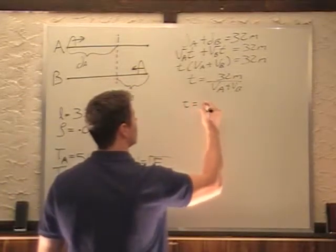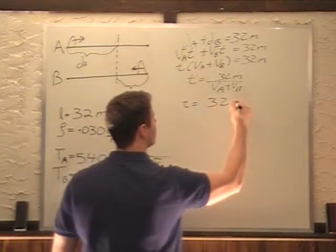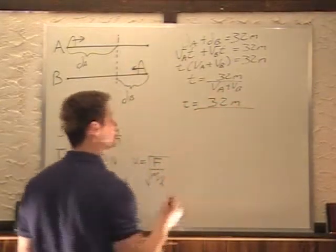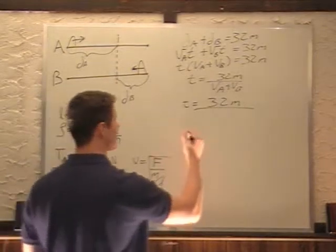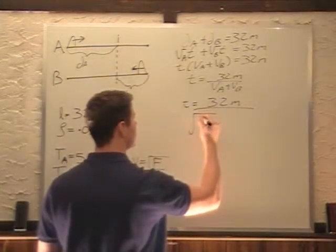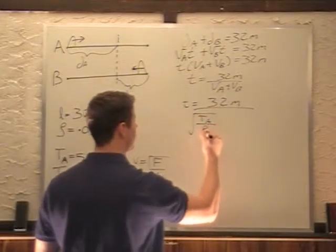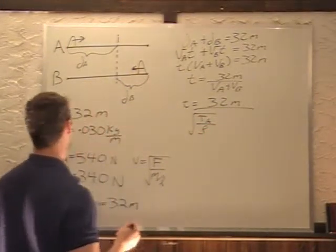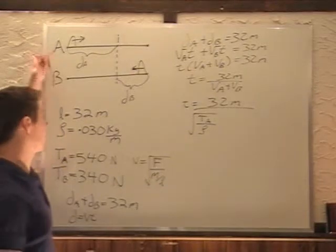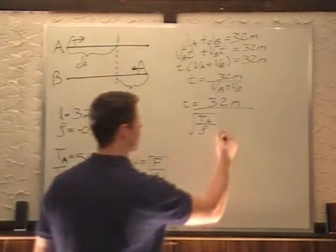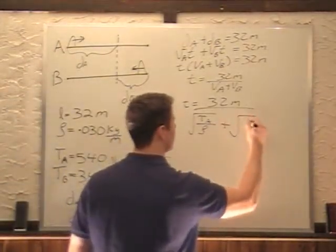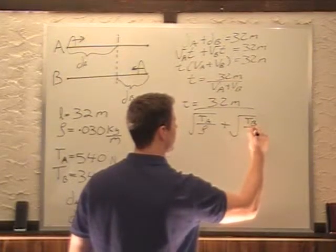Time now equals 32 meters over velocity for A. So if you wanted to figure out the velocity for A, square root the force for A. So I'm going to call it TA divided by rho. It's rho for A, but rho is the same for both of them. So I just write that down. Plus square root tension for B divided by rho.